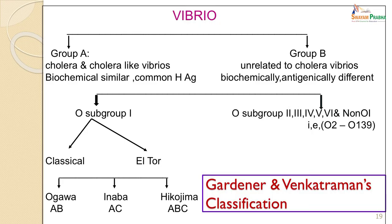Classification of Vibrios into its various biotypes and serotypes is done based on the Gardner and Venkatraman classification. Vibrios are first typed with the common H antigen. If agglutination with the common H antigen is seen, all cholera and cholera-like Vibrios with the common H antigen are placed into group A.